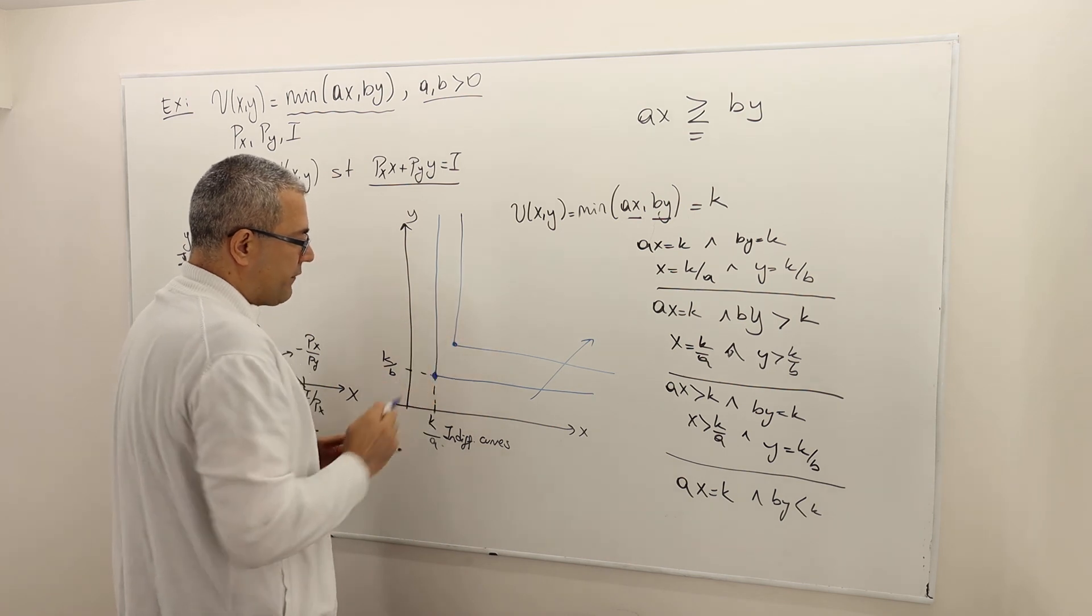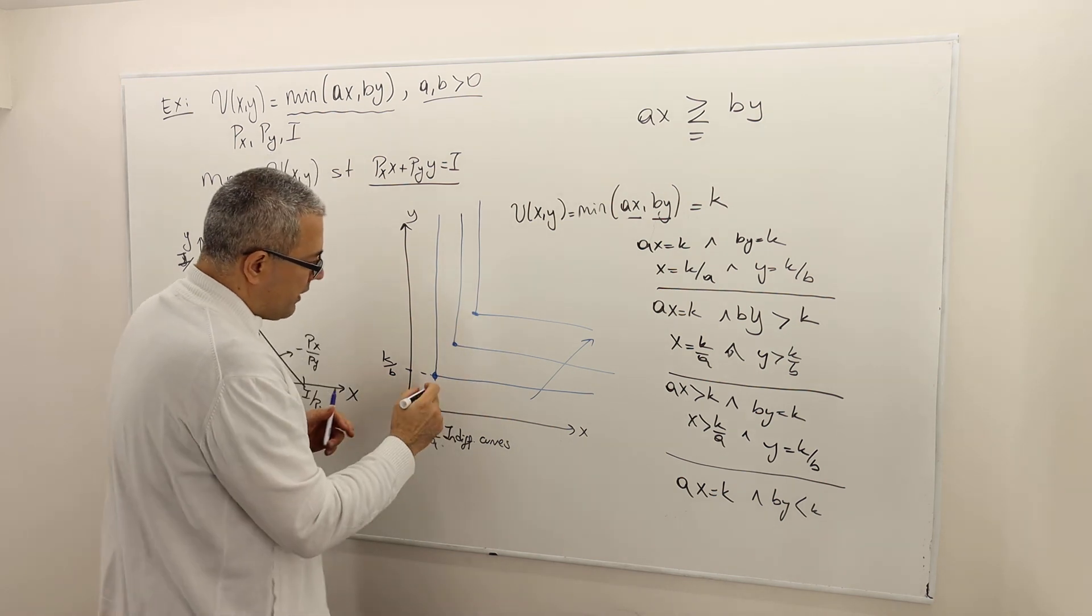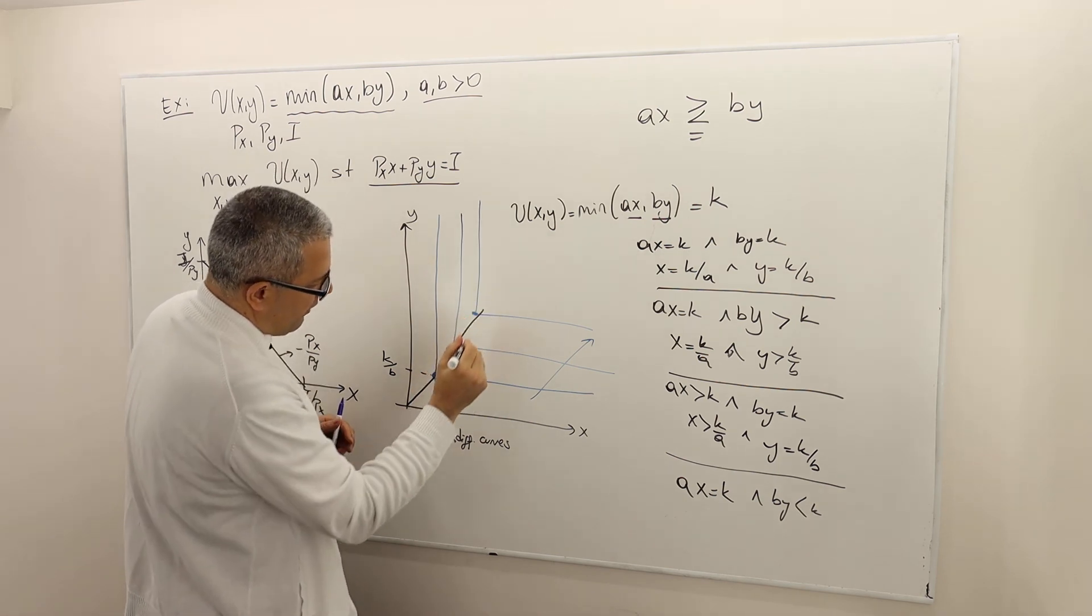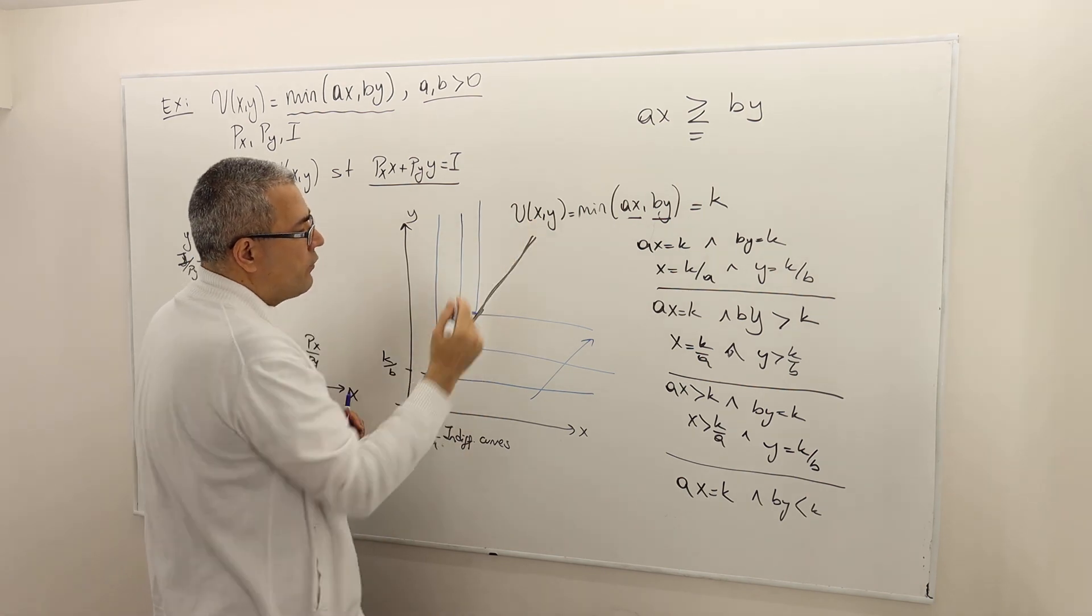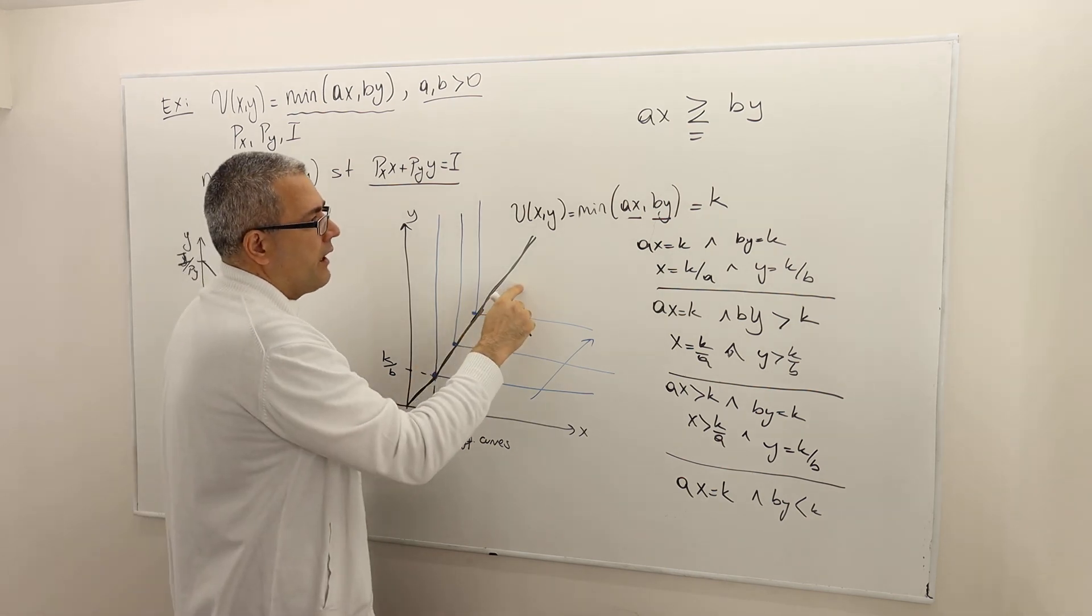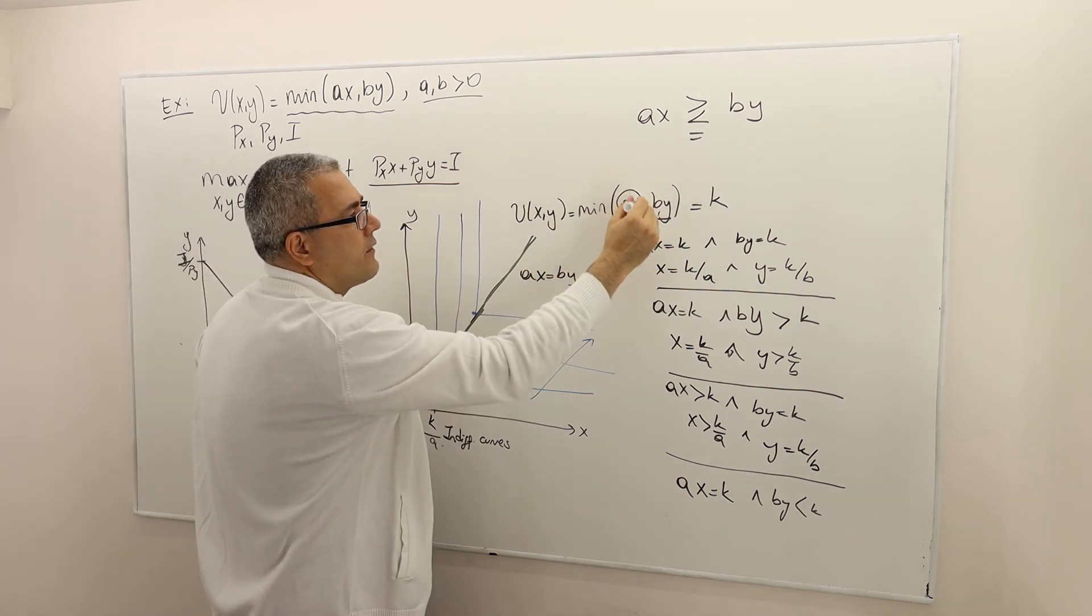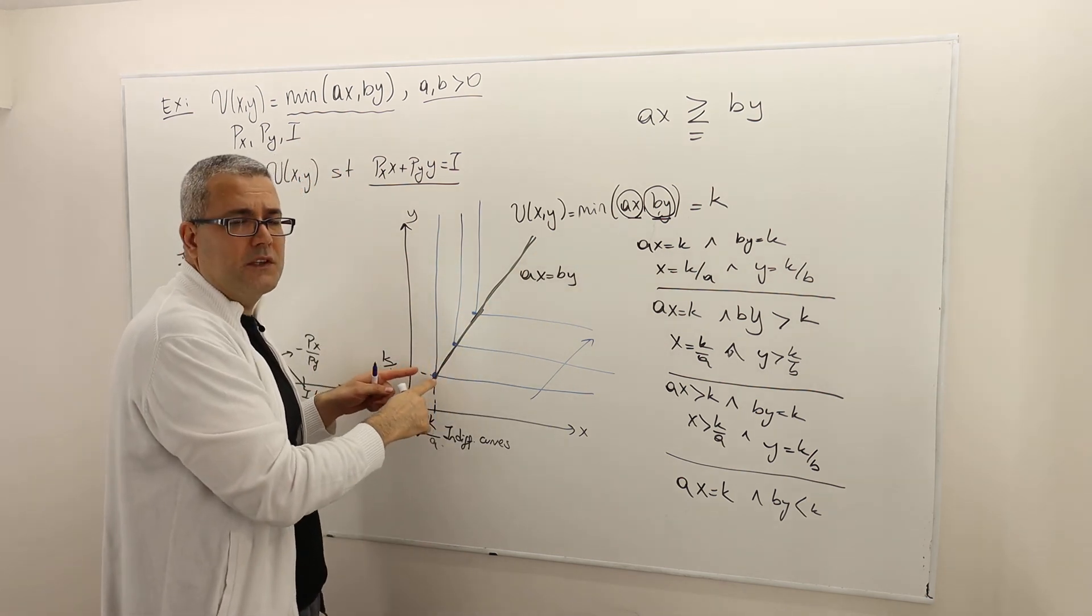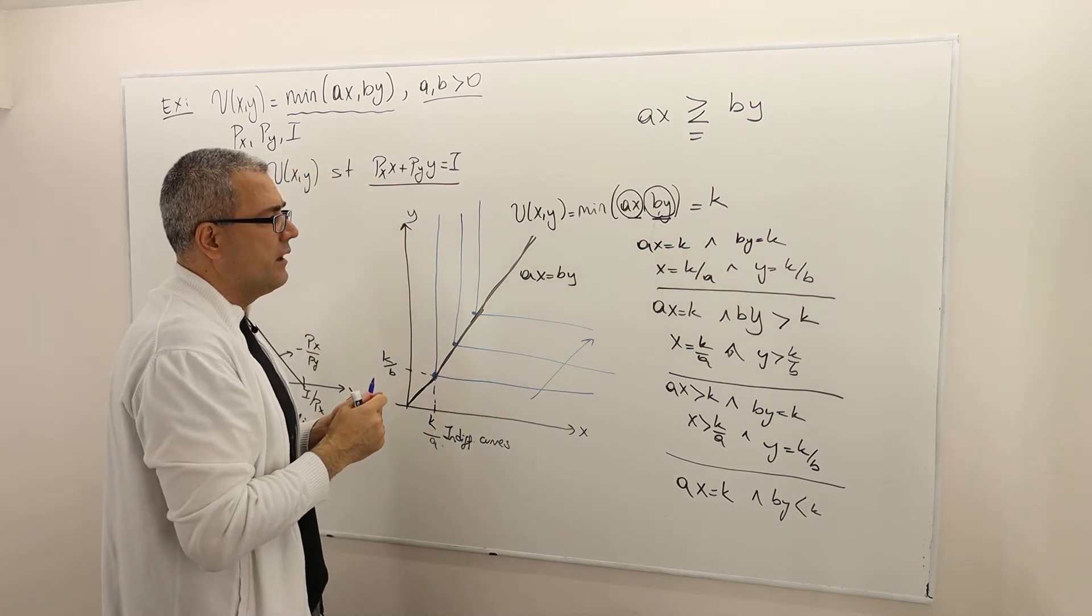Well, what matters, however, is that all those kink points are going to lie, hopefully this is a straight line. All right. So all these kink points are going to move on this array starting from origin, and this array is nothing but AX equals BY line. So AX, the first term, equals BY line. Remember, this is how we found this first point, where the first and the second term are actually equal to the same number, which is K.